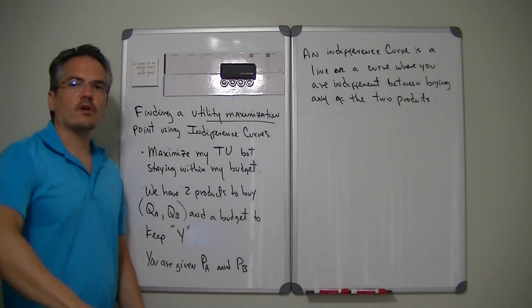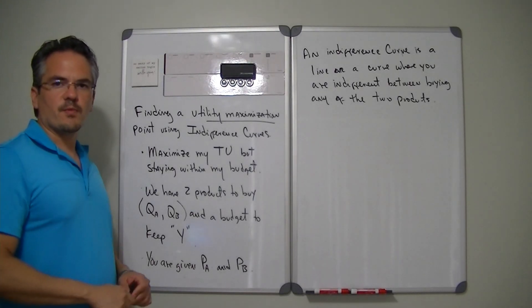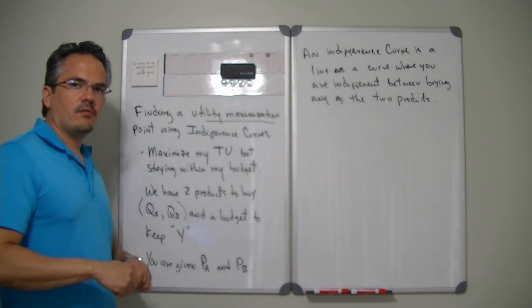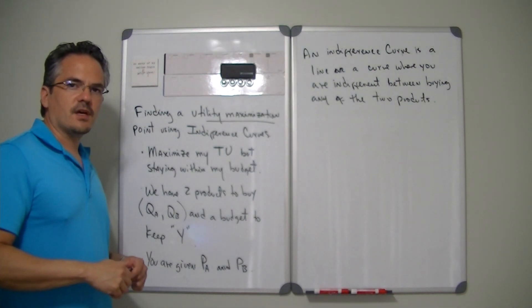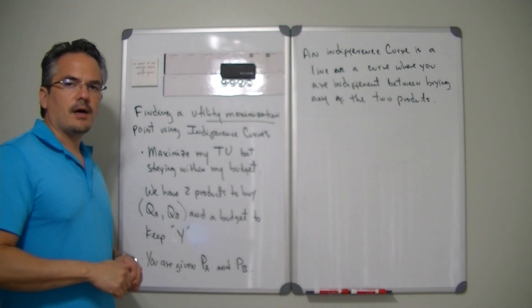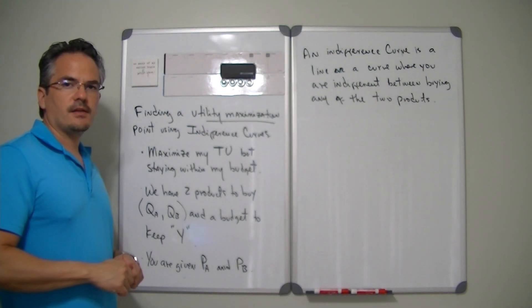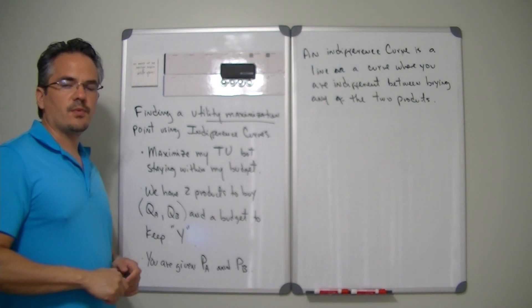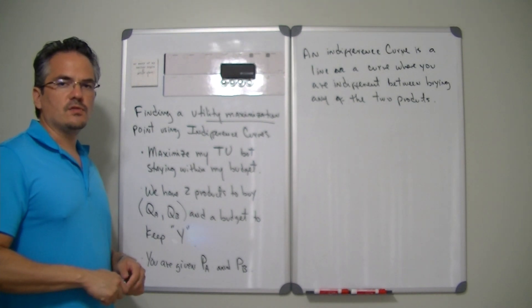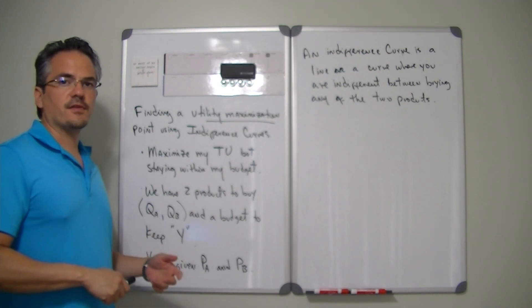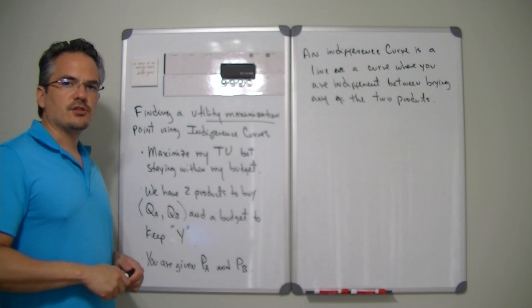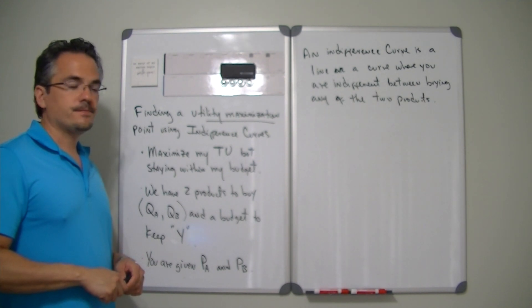Hello and welcome to another lesson with Professor Choi. Today we're going to be having a discussion about how to find a utility maximization point using indifference curves instead of the algebra that I showed you before in a different video.